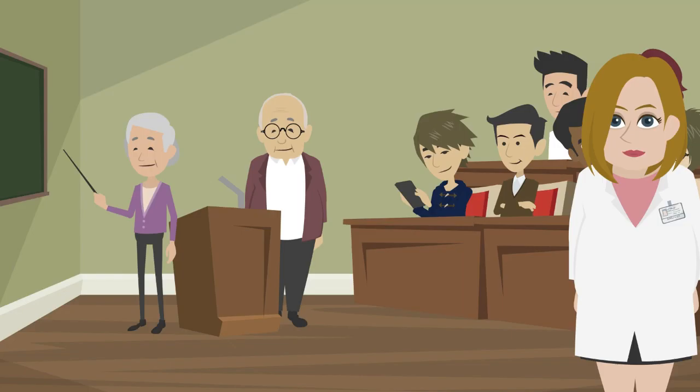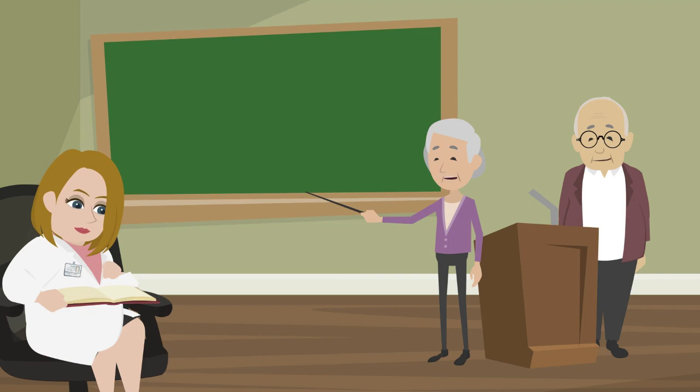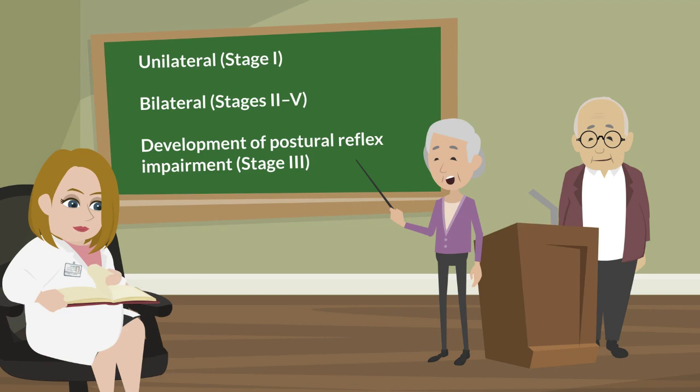The morbidity and clinical progression of Parkinson's disease were studied in the important article by Hone and Yahr in which their internationally recognized staging system was first introduced. This time-honored staging system is anchored in the distinction between unilateral, stage 1, disease and bilateral disease, stages 2 to 5, and the development of postural reflex impairment, stage 3, as a key turning point in the disease's clinical significance.